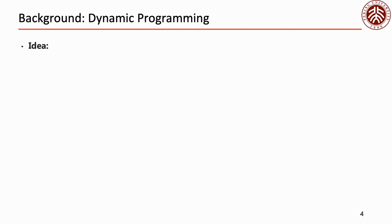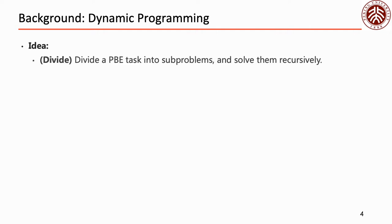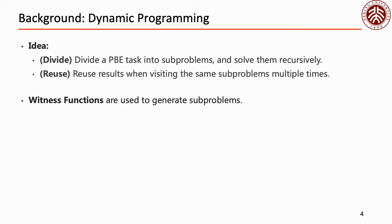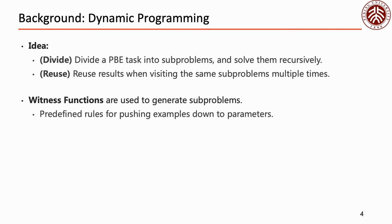The key idea of dynamic programming is twofold. It divides a PBE task into subproblems and solves them recursively. To accelerate, it caches the results for all finished subproblems and reuses them when visiting these subproblems again. To generate subproblems, the concept of a Witness function is proposed. Witness functions can be regarded as the inverse semantics of operators, and they are predefined rules for pushing examples down to parameters.